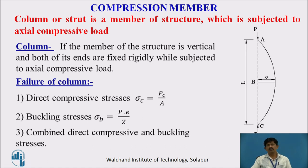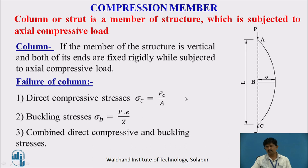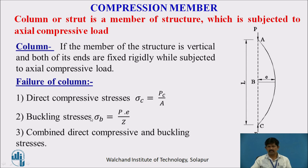How may the failure of a column occur? Column failure may occur by direct compressive stress. This case is majorly found in short columns where length upon least lateral dimension is less than 12 — such columns fail by crushing. Whereas long columns fail by buckling when the length upon least lateral dimension is greater than 12.